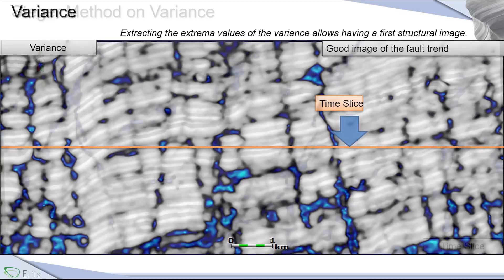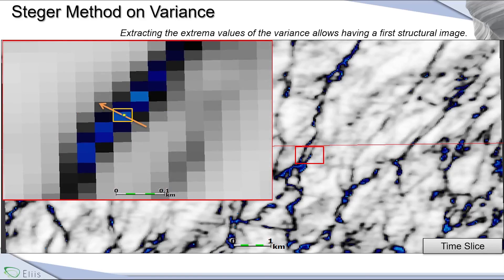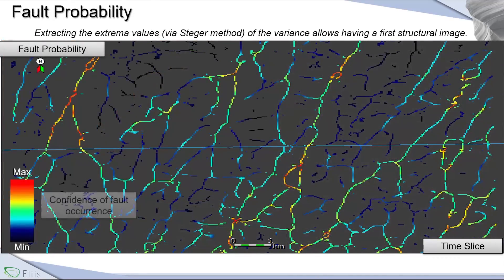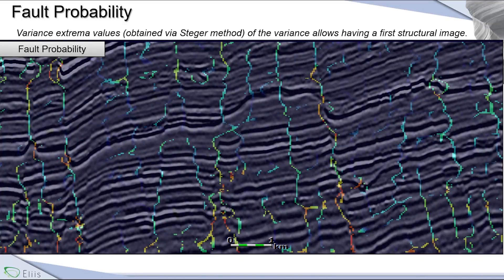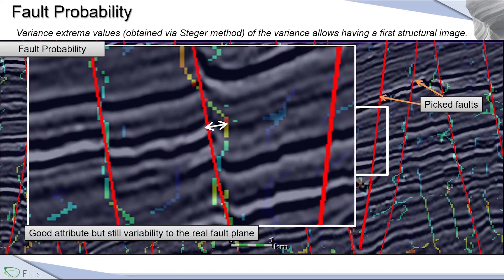Switching to time slice view — it's very good to see the main structural events. Based on this attribute, we can compute the maximum of this attribute on a window to get this kind of result. The color bar is from blue to red; red means a very high confidence on fault occurrence. If I display the picked fault, it's a good attribute to highlight structural events, but we have very high variability on the fault plane. Due to this, it's not possible to extract the fault automatically from this attribute.